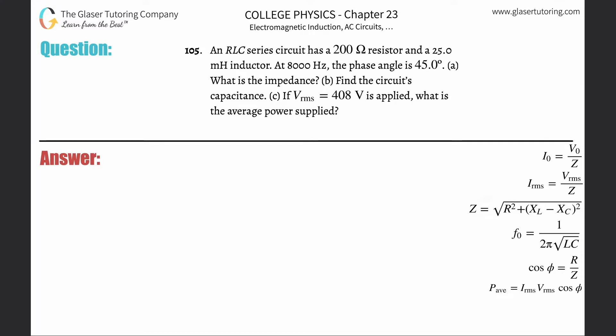Number 105: an RLC series circuit has a 200 ohm resistor and a 25 millihenry inductor at 8000 hertz. The phase angle is 45 degrees. Letter a: what is the impedance?